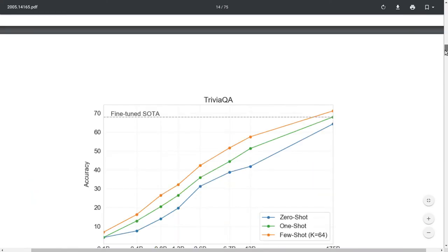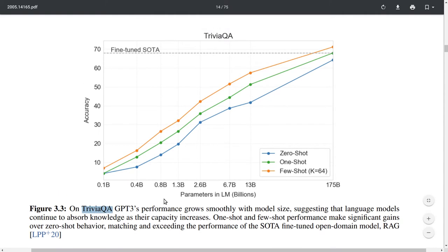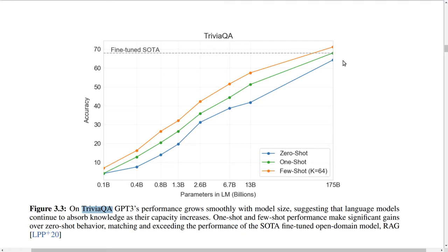Looking at specific tasks like the TriviaQA dataset, you again see this trend where accuracy increases with larger number of parameters. One interesting trend — which makes sense but is still cool to see — is that you get a consistent improvement in the one-shot case over zero-shot, and even further improvement in the few-shot case. In some tasks, the few-shot case is actually able to outperform state-of-the-art models that were fine-tuned on training data for that particular task.